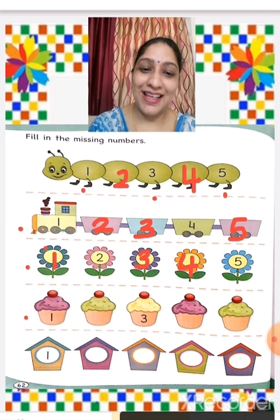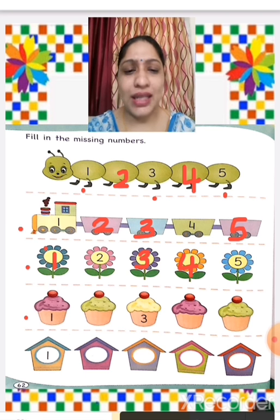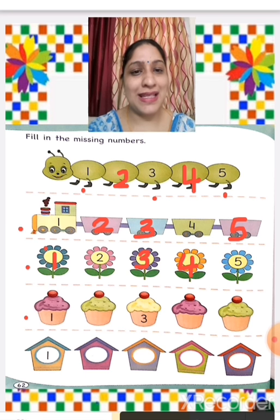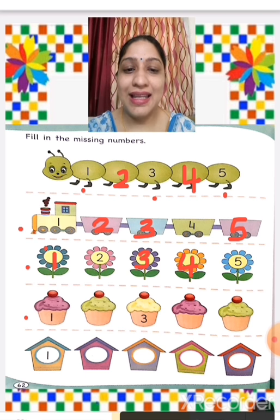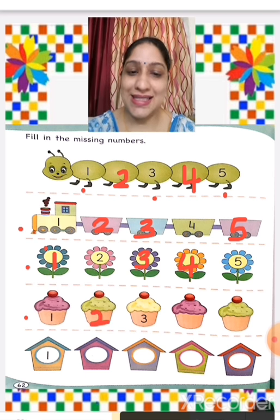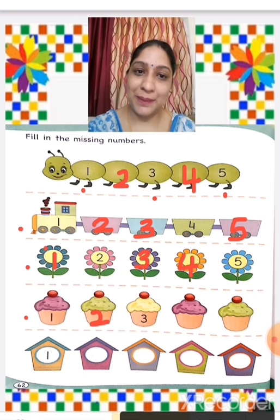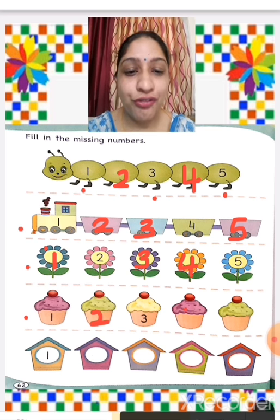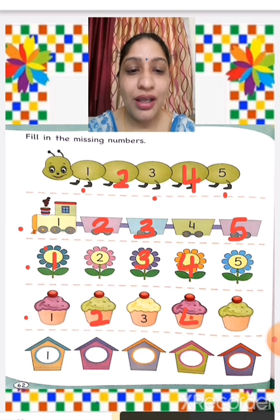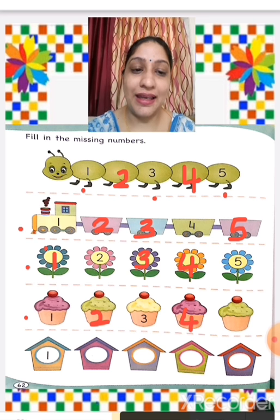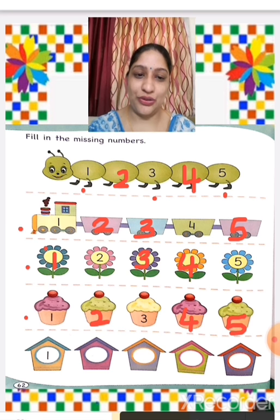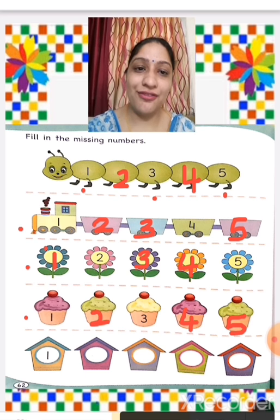The next row shows cupcakes — 1 and 3 are written. Let us do the missing numbers: 1 is there, 2 is missing, 3 is there, 4 is missing, and 5 is also missing — so we write 4 and 5.